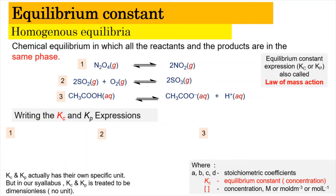Homogeneous equilibrium is a chemical equilibrium in which all the reactants and products are in the same phase — sama fasa. For example, N2O4 is converted into 2 mol of NO2, which is in the gaseous state. As you can see, the reactant as well as the product are in the same state of matter, which is gaseous, and therefore they are known as homogeneous.